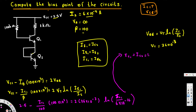Solving that equation gives IC1 = 1.035 mA. Since IC1 = IC2, both collector currents are 1.035 mA. Now we need to find VCE. Since the emitter currents are equal for both transistors, VCE will also be the same for both.